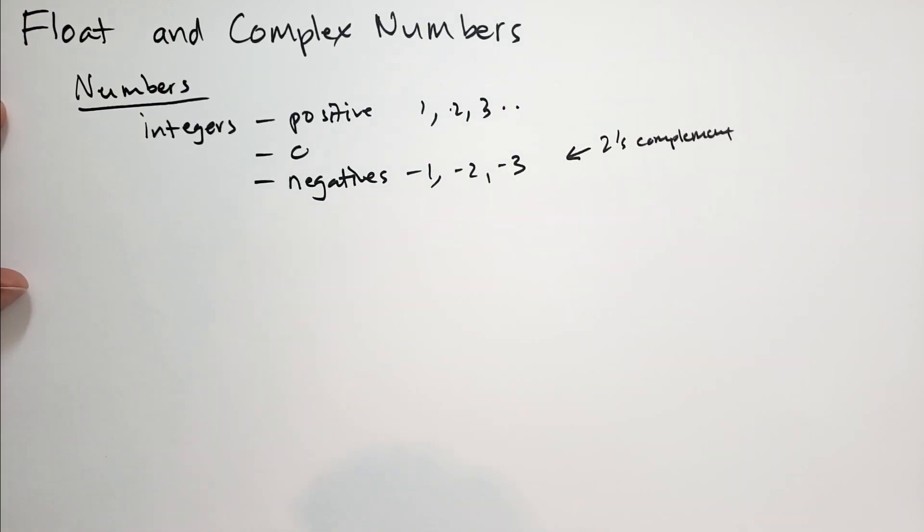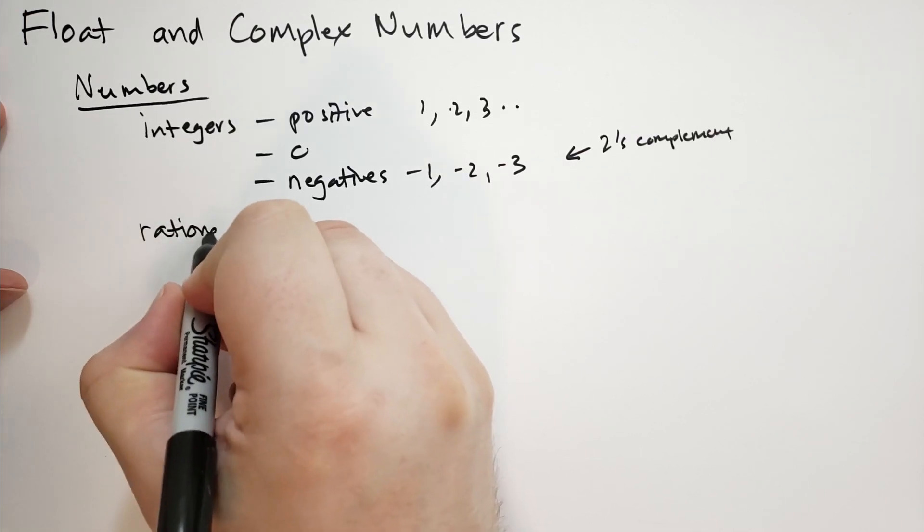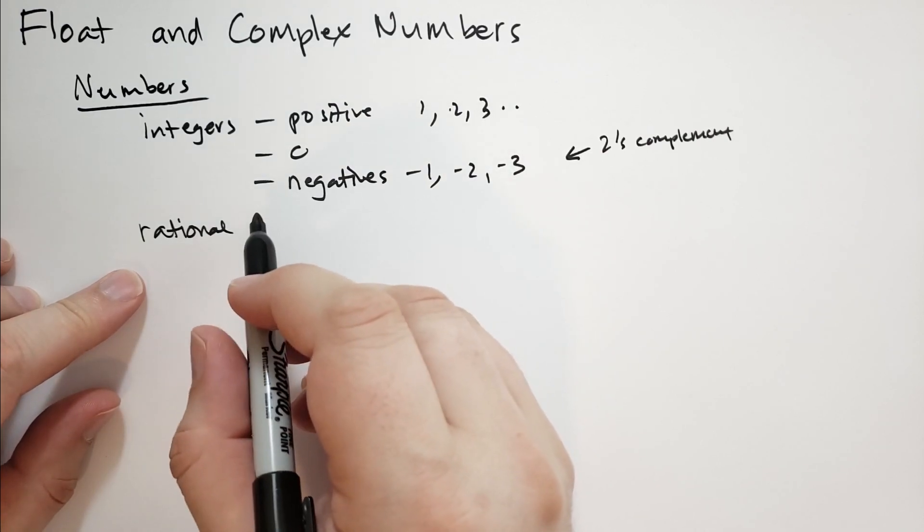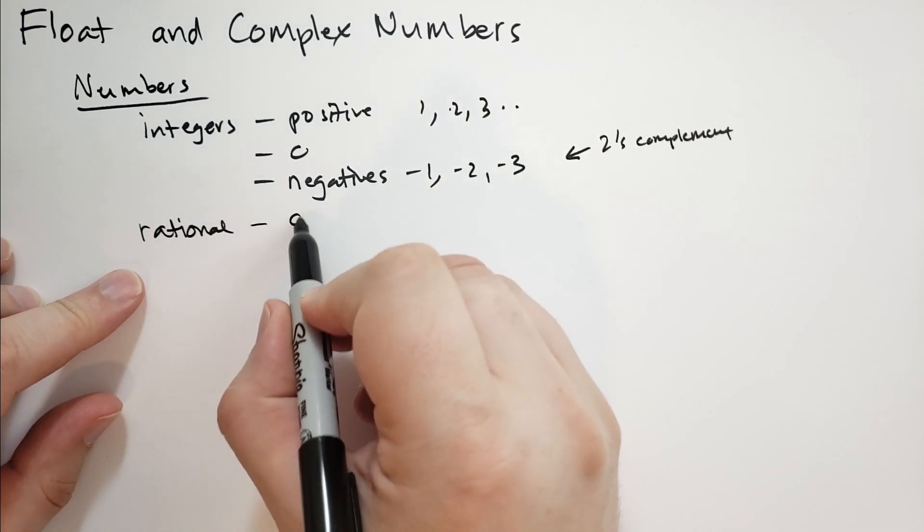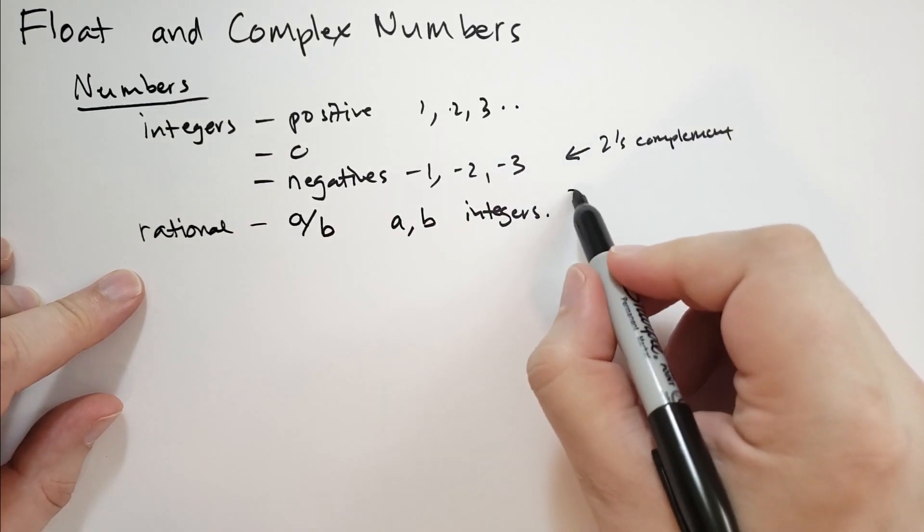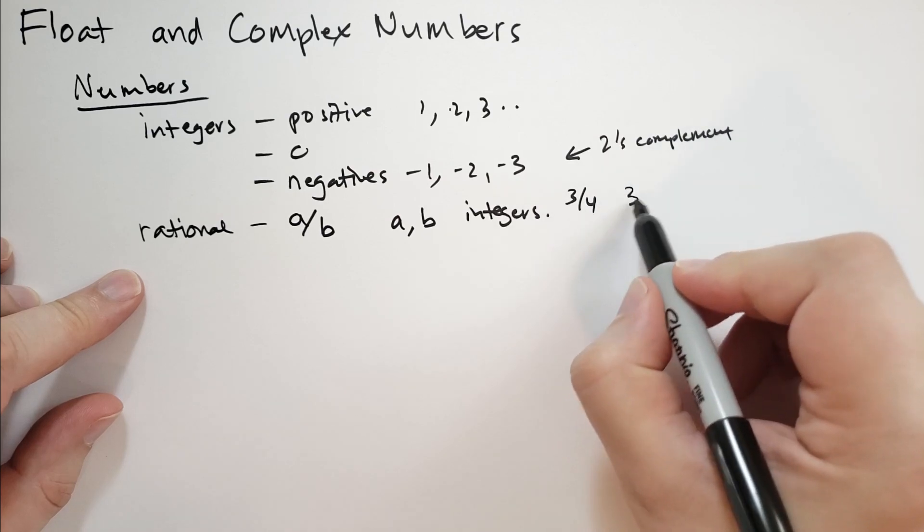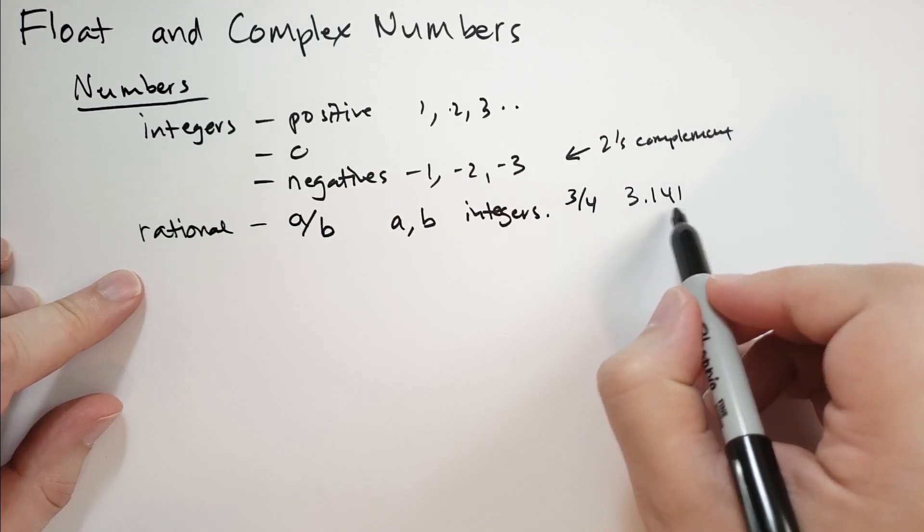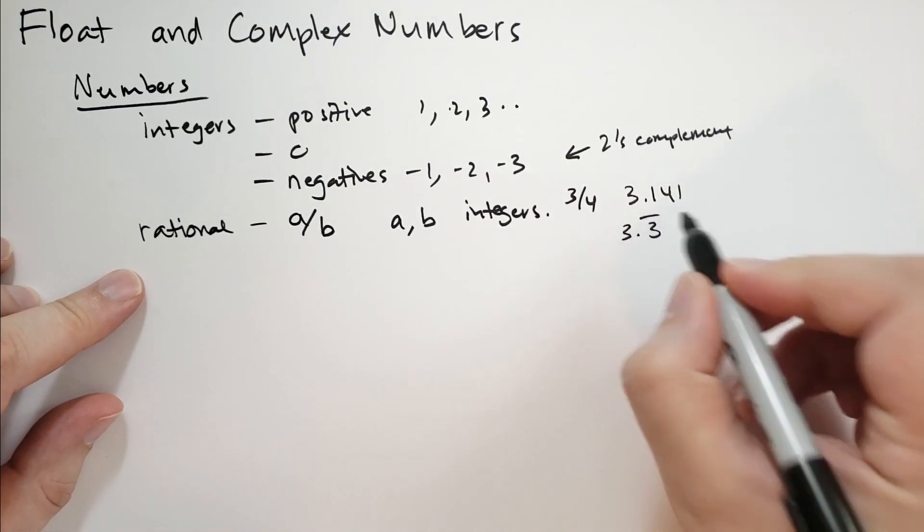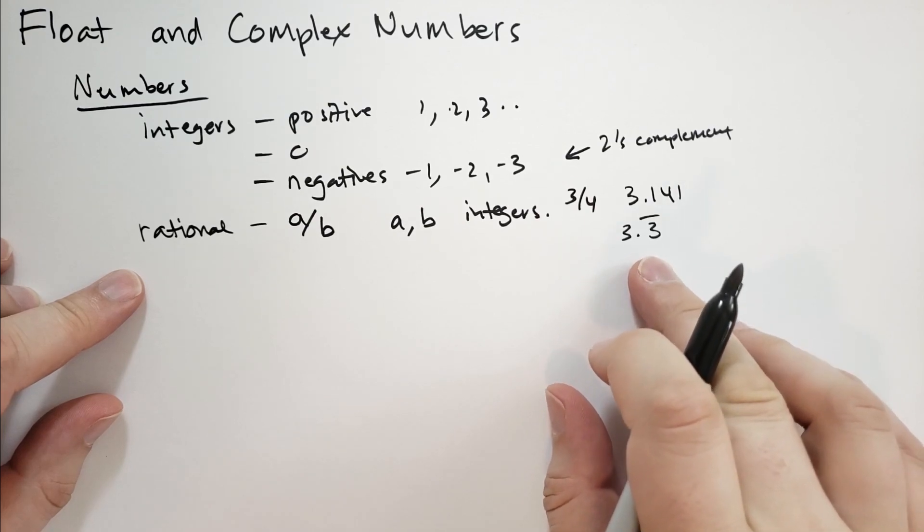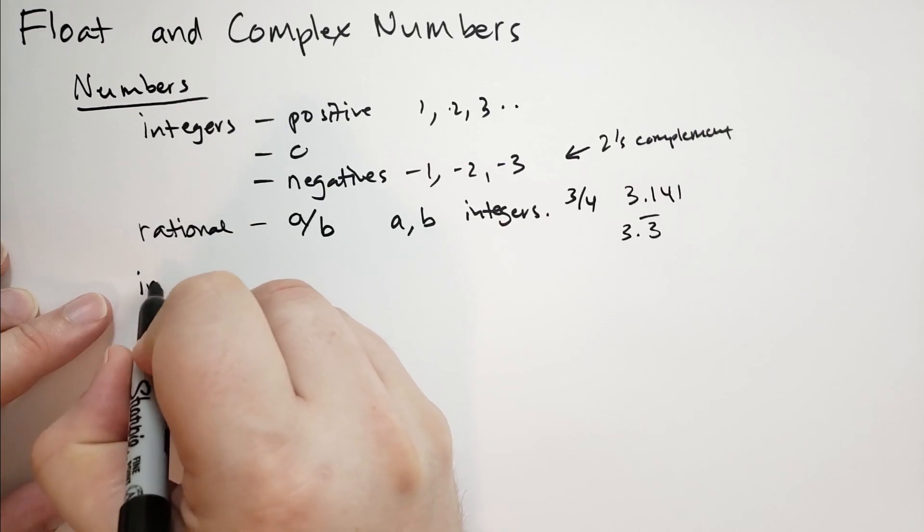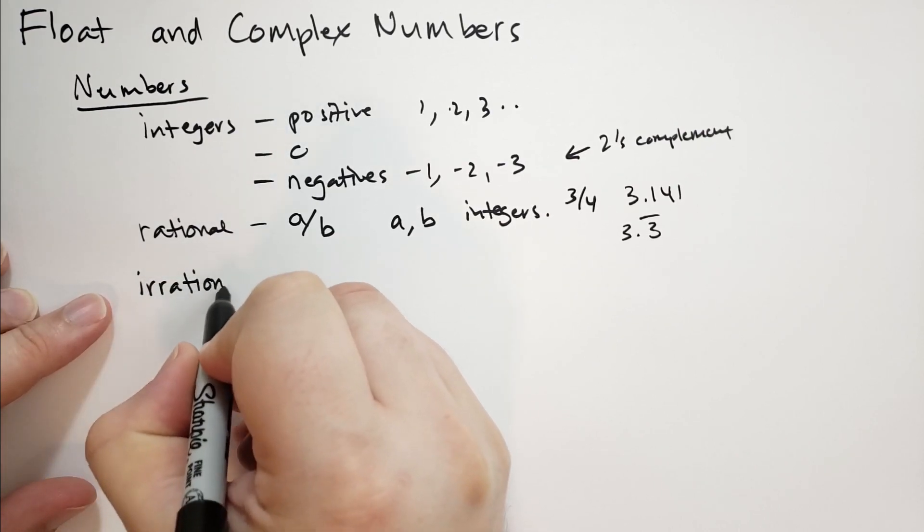Then we also have what are called rational numbers. And this doesn't mean rational as in it makes sense. This is rational as in a ratio of two numbers. So this would be like a number a over b where a and b are integers. This includes numbers like three quarters. It also includes like 3.141, because this is three and 141 thousands.